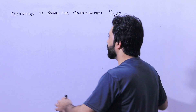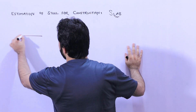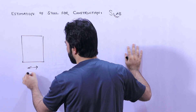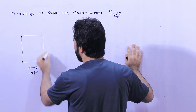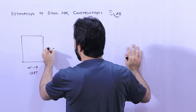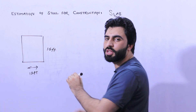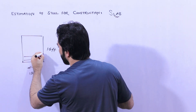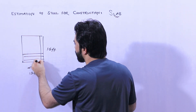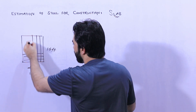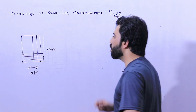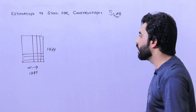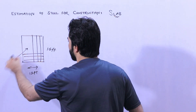As you can see, this is an RCC slab which has a width of 12 feet and a length of 16 feet. As you know, we are providing main bars on one side and distribution bars on the other side. We need to find the steel reinforcement details — especially the quantity of steel in this RCC slab.